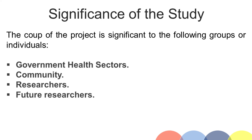The scope of the project is significant to the following groups or individuals. Government health sectors: the information gathered by this system will help them design programs that will alleviate poverty and help people who suffer from malnutrition caused by poverty.